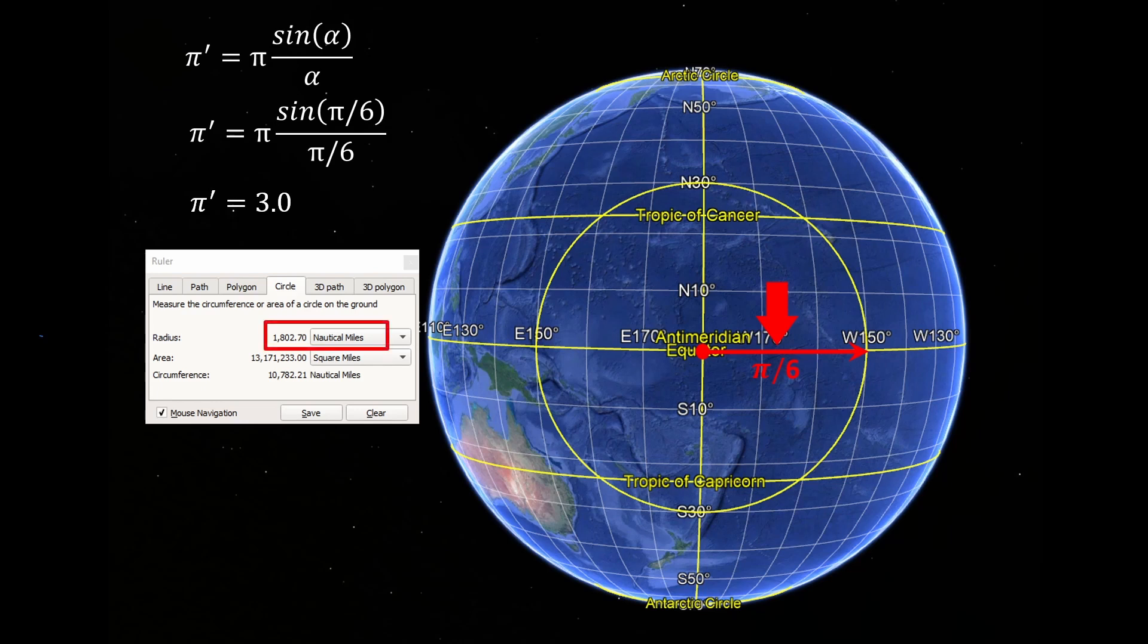In Google Earth, we've got a radius of 1802.7 miles and a circumference of 10,782.21 miles. If we divide that circumference by twice that radius, you get spherical pi of 3.0. So that's the story, and that's why spherical pi cannot be a constant.